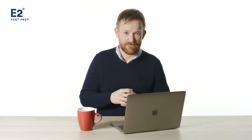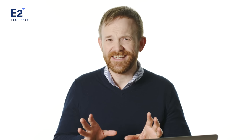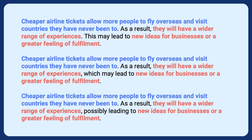Let's see what we can do to improve grammar complexity and the extending of ideas. Starting with the first point: 'Cheaper airline tickets allow more people to fly overseas and visit countries they have never been to. As a result, they will have a wider range of experiences. This may lead to new ideas for businesses or a greater feeling of fulfillment.' Now I've extended the idea using 'as a result' and 'this may lead to.' We can improve further: '...a wider range of experiences, which may lead to new ideas for businesses or a greater feeling of fulfillment,' or '...possibly leading to new ideas for businesses or a greater feeling of fulfillment.'